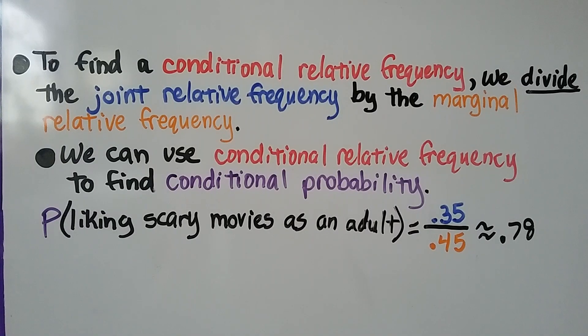To find a conditional relative frequency, we divide the joint relative frequency by the marginal relative frequency, and we can use conditional relative frequency to find conditional probability.